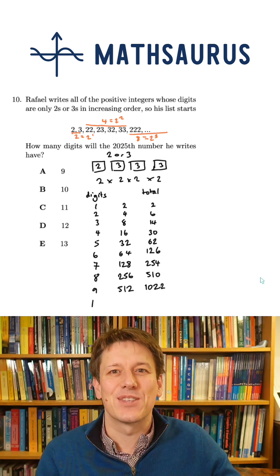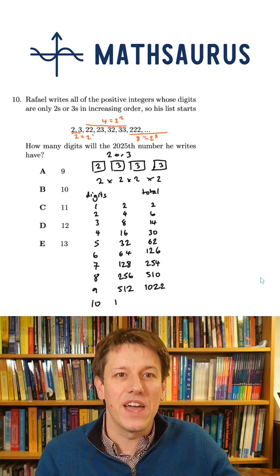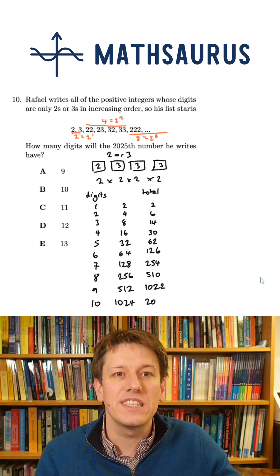512 nine-digit numbers to take us to the 1022nd number. And then there will be 1024 10-digit numbers to take us to the 2046th number.